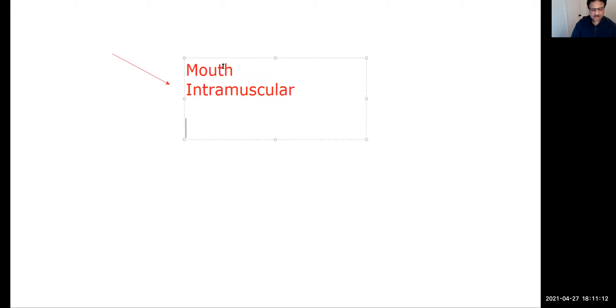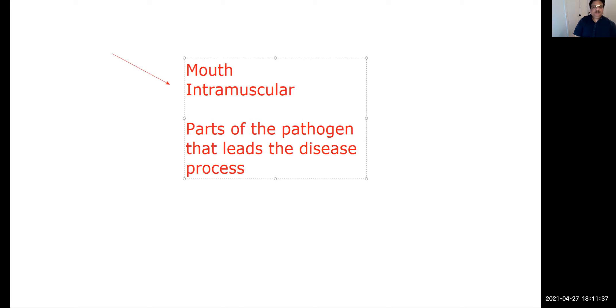What are these vaccines? These vaccines are parts of the pathogen. Pathogen is an organism that can cause disease. Parts of pathogen that leads the disease process. If there's a bacteria or virus, the whole bacterial protein may not be causing inflammation or disease initiation in our body. But there could be specific amino acids in a specific protein that contributes to the pathogenesis.